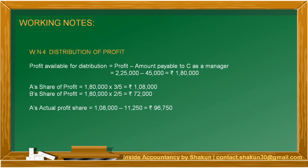Now let's look at the distribution of profit. The profit available for distribution equals ₹2,25,000 minus ₹45,000 (the amount payable to C as a manager, which is borne by the whole firm) = ₹1,80,000. This is shared between A and B in their profit-sharing ratio of 3:2, giving A's share as ₹1,08,000 and B's share as ₹72,000. Since A has to meet the deficiency of ₹11,250, we subtract that from A's share, giving A an actual share of profit of ₹96,750.